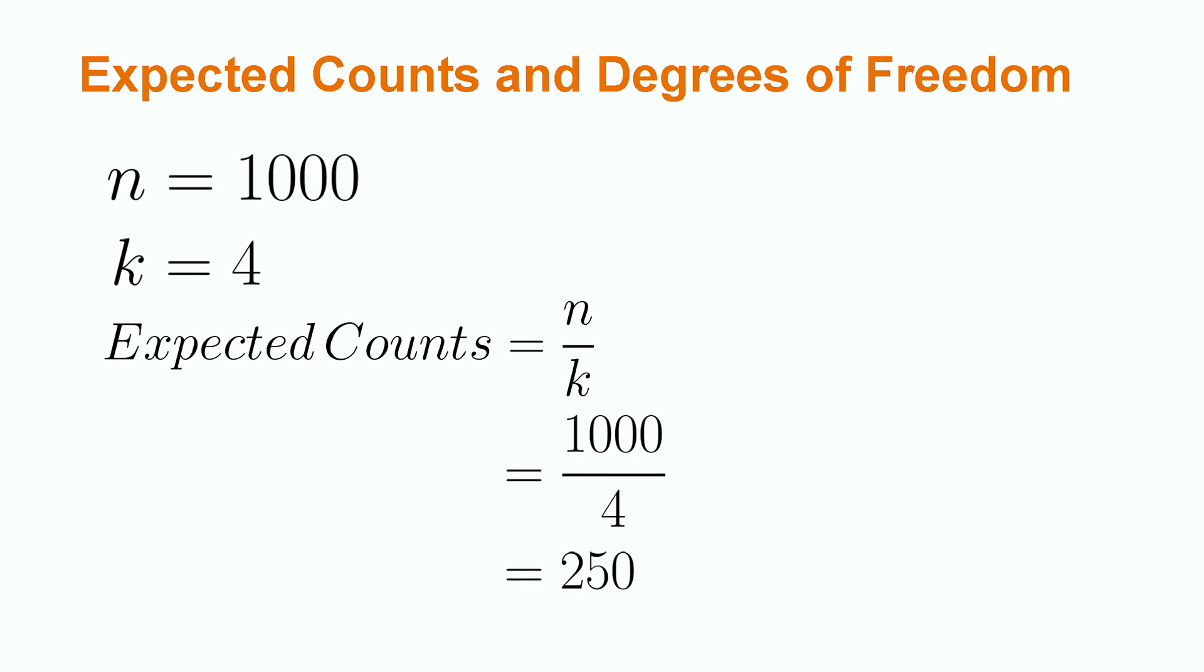We now need to determine our degrees of freedom. In a chi-square test, the degrees of freedom are calculated by subtracting 1 from the number of groups. In our community college example, we would have 3 degrees of freedom since we have 4 programs and 4 minus 1 is 3.